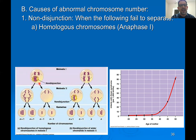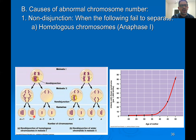The cell that receives an extra chromosome will have one extra chromosome from this point on, and the other cell — resulting from receiving only one of the chromosomes — will be missing one chromosome. As meiosis continues, half of the cells produced will have an extra chromosome, and half will be missing one chromosome.